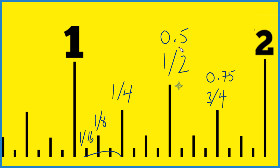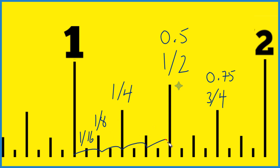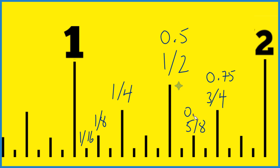Now it's between 0.5 and 0.75, so somewhere in here. Let's look at these eighths of an inch — here's one eighth, two eighths, three eighths, four eighths — that's five eighths of an inch right there, or one and five eighths of an inch. Five eighths is equal to the decimal 0.625.